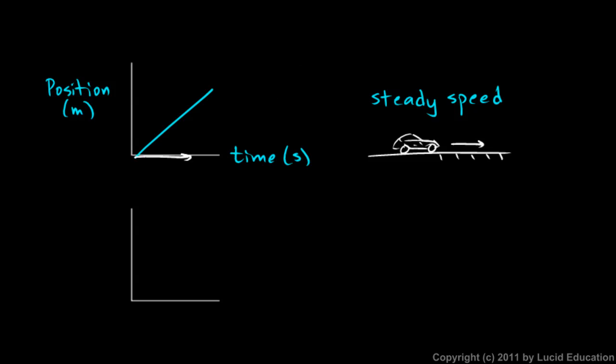As time goes on, the position gets greater and greater. Now, if we take that same motion and we make a graph of the velocity, the velocity might be in meters per second, and that's compared to the time in seconds.